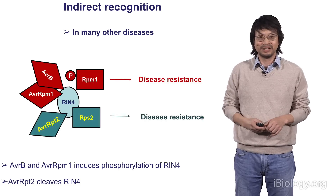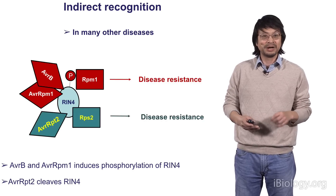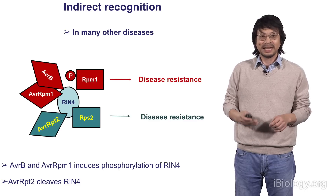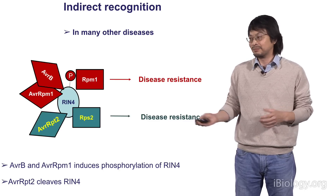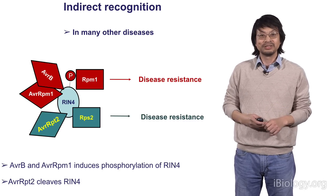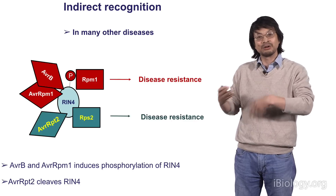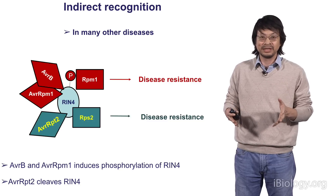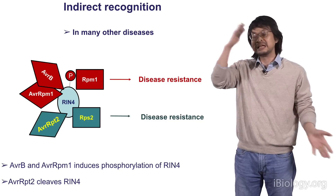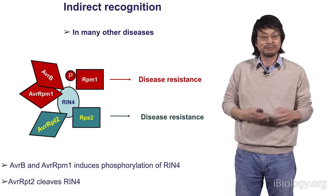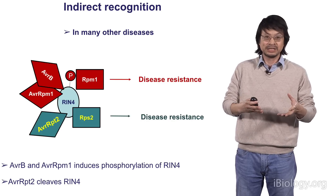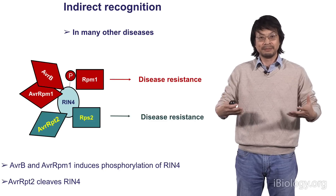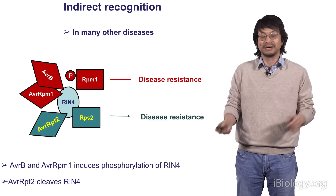There's also another AVR protein called AVRPD2, which modifies RIN4 differently - it actually cleaves RIN4 because it's a protease. That is recognized by another R protein called RPS2. You can see that many variations of indirect recognition could potentially explain why a limited set of R proteins could recognize many different AVR proteins from different pathogens, because they could induce modification of another plant protein, and that modification is then sensed by the receptor.